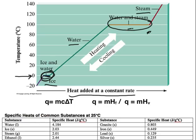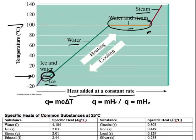Our melting point is at zero and our boiling point is at 100 — we know that because it's water. When we do calculations, you have to locate where on this chart we are. On any of the slanted lines, you use Q = mcΔT. On the flat lines, we use the heat of fusion and heat of vaporization constant times mass. If we have multiple steps, we just do them and add them up.